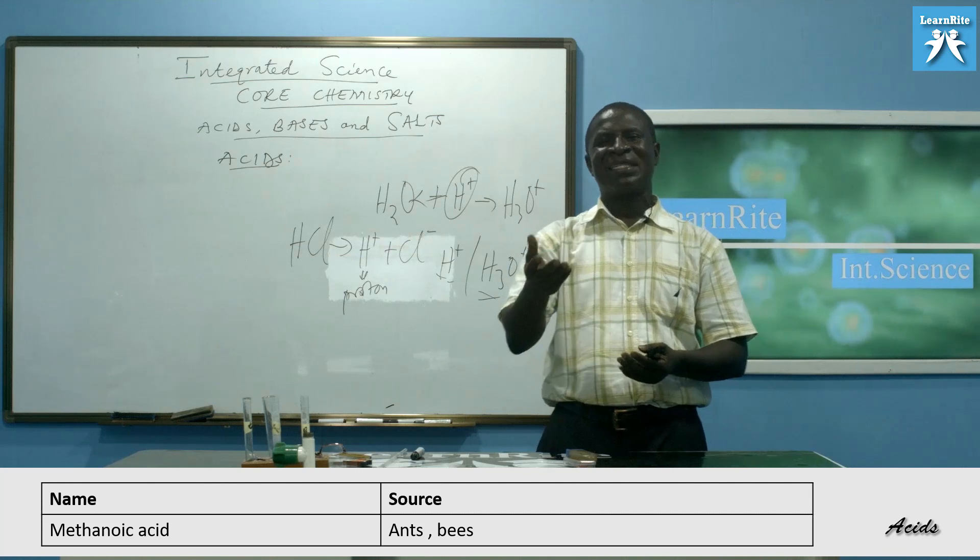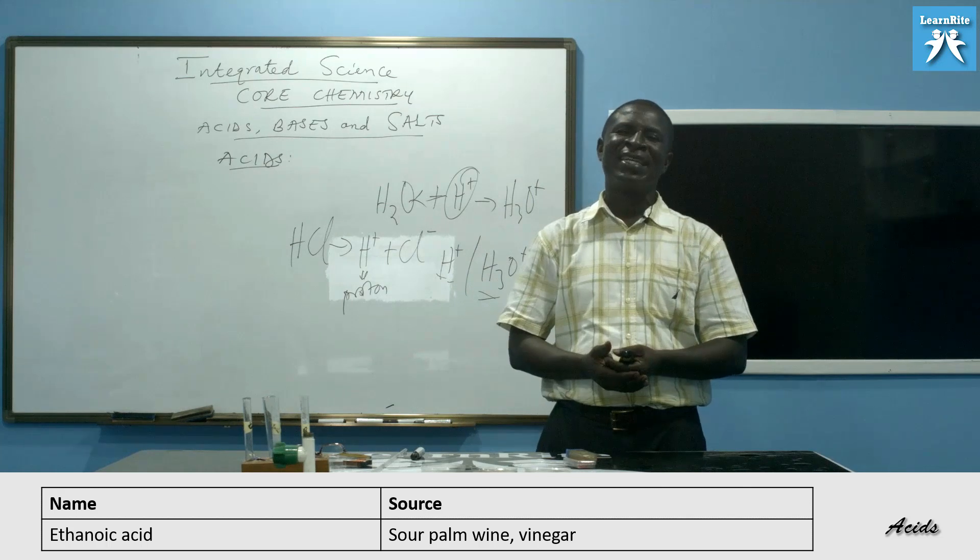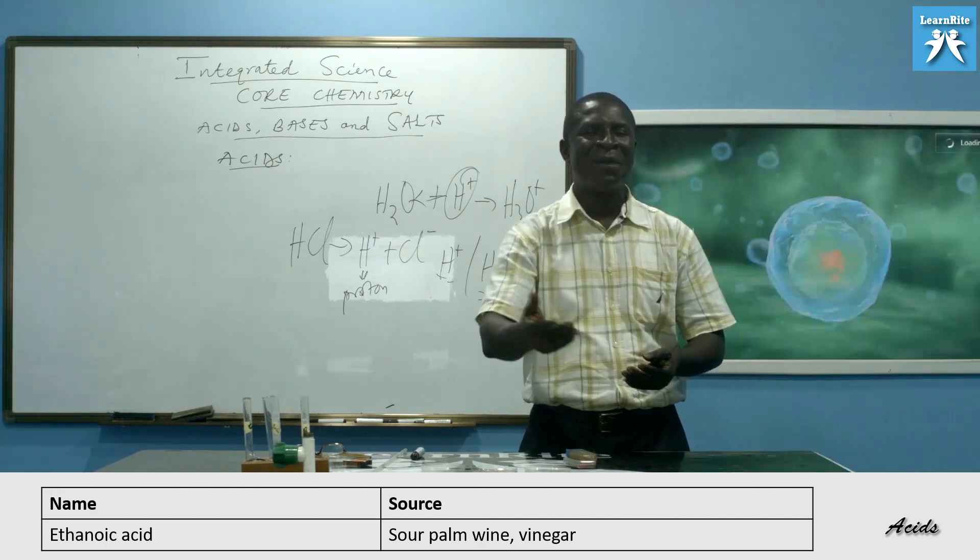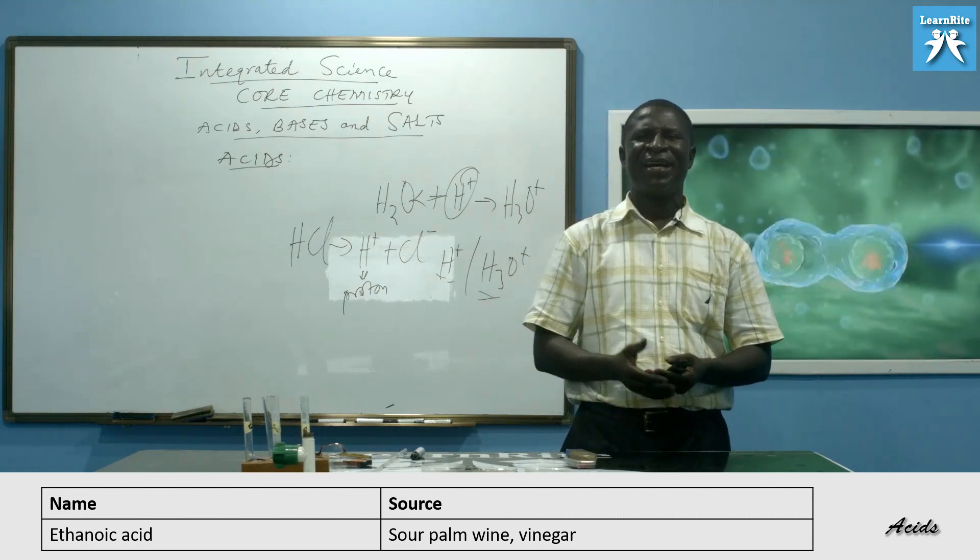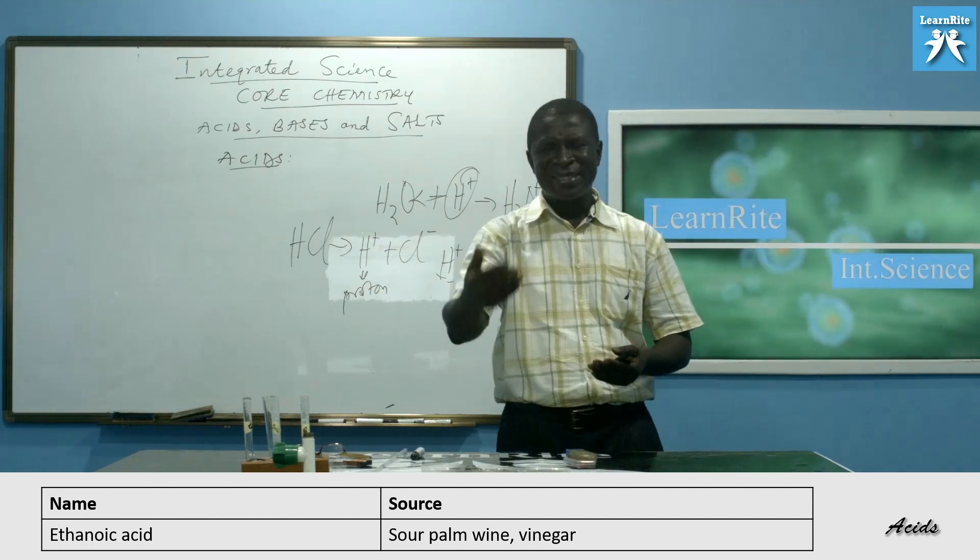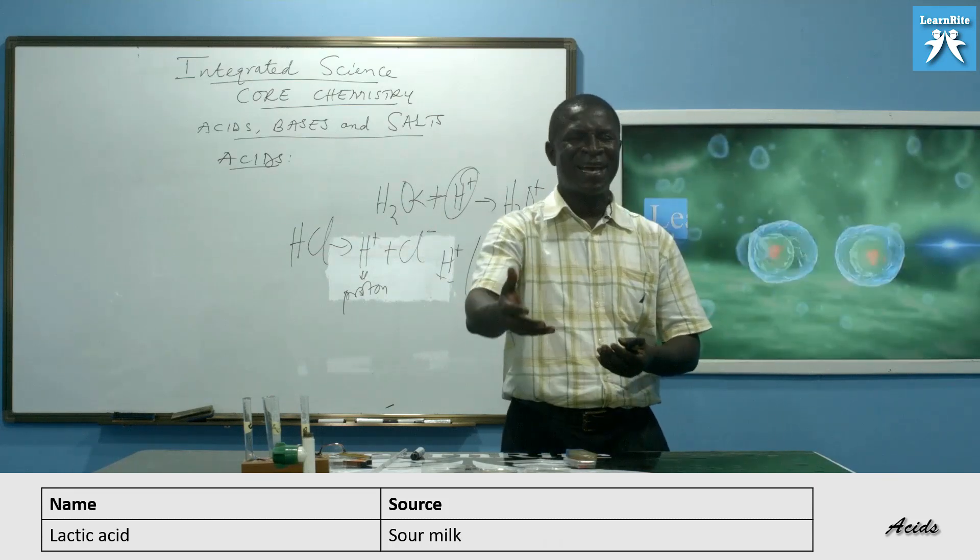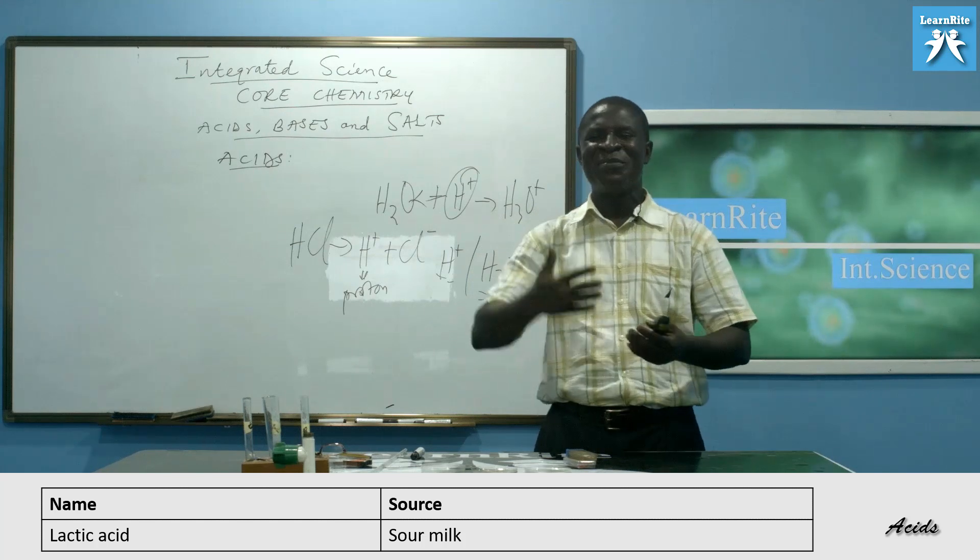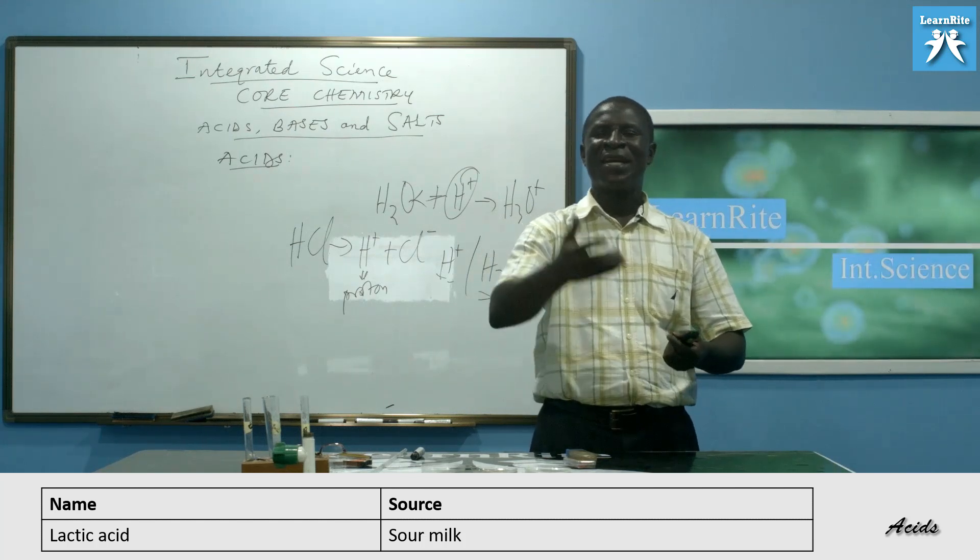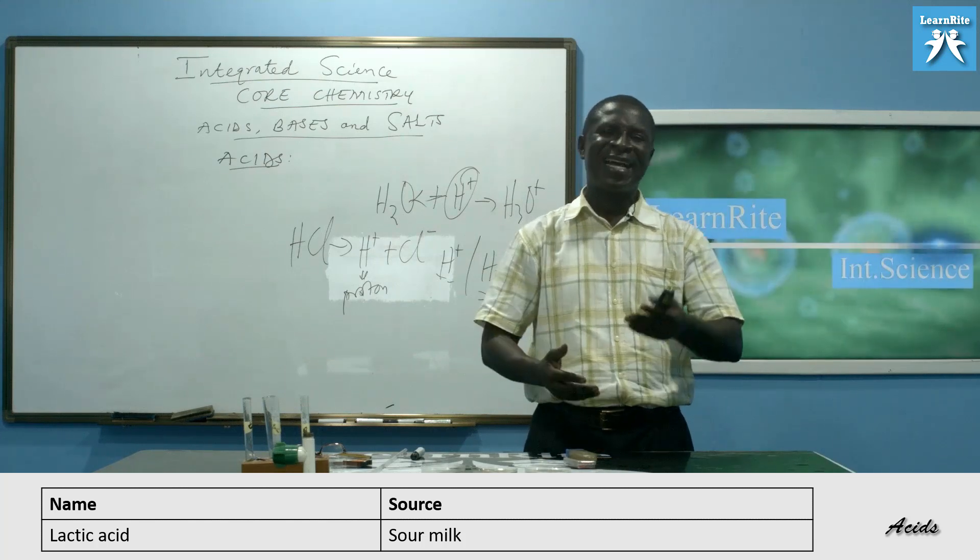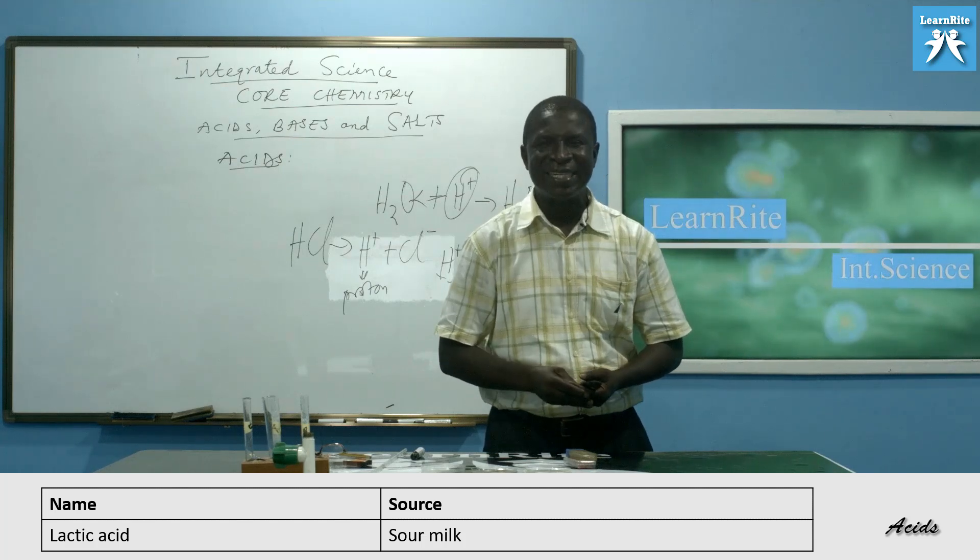Then the next one, as an example, is ethanoic acid. Where can we find ethanoic acid? We get it in sour palm oil and vinegar. So these are all organic acid. Lactic acid, we get it in milk, sour milk. Me and you have taken breast milk before. We are grown-ups and we take milk such as ideal milk, carnation, name them. They all contain lactic acid.